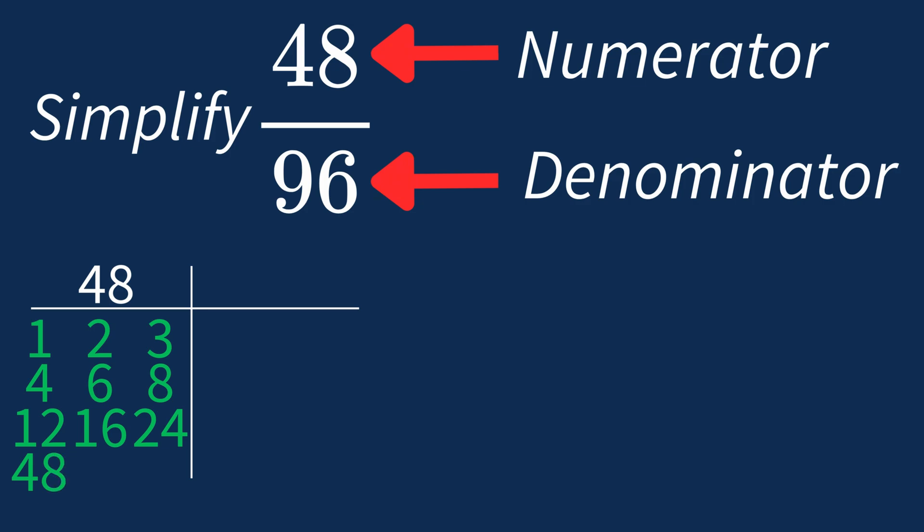and 48. For 96, the factors are 1, 2, 3, 4, 6, 8, 12, 16, 24, 32, 48, and 96.